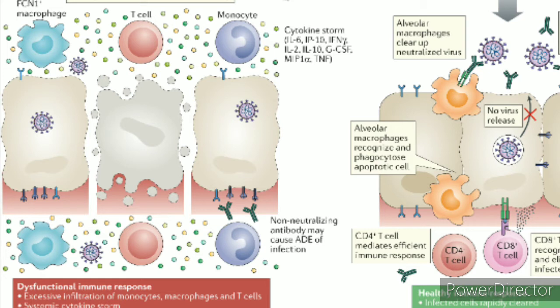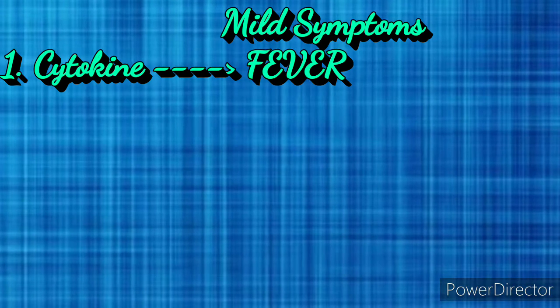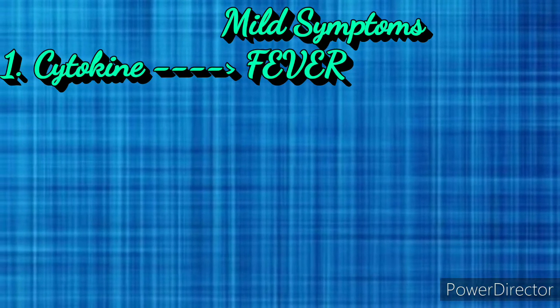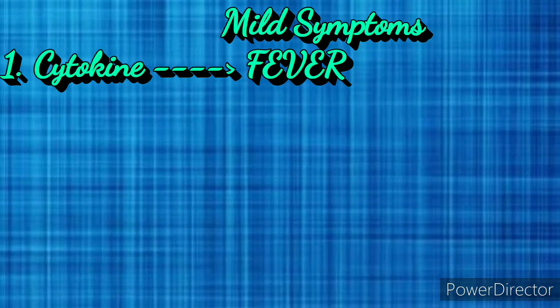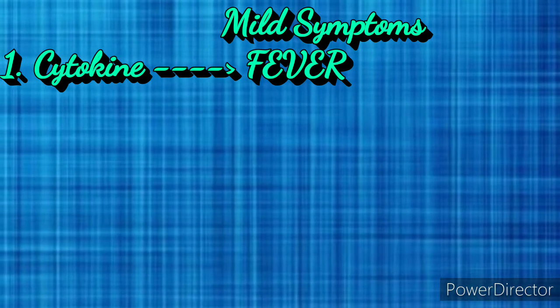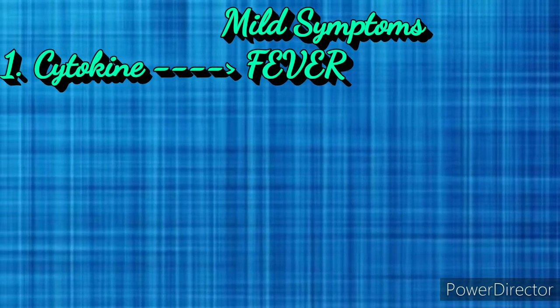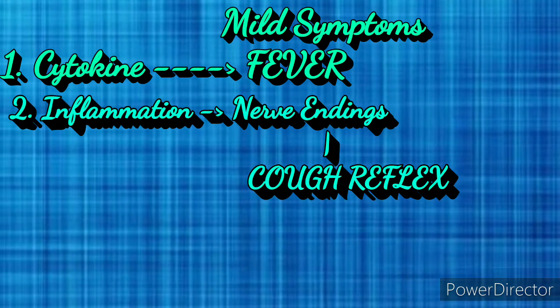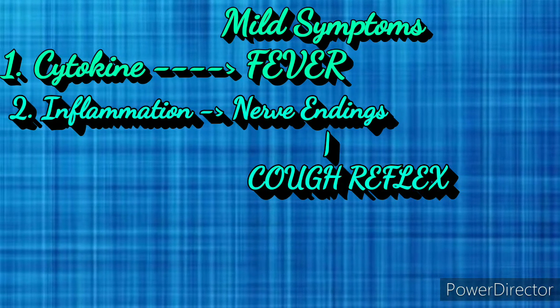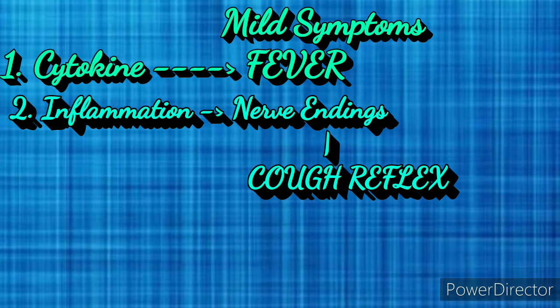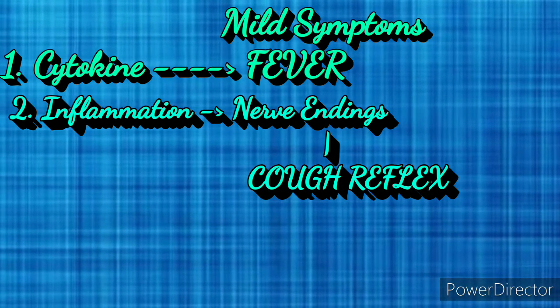Therefore, disease severity in patients is not only due to viral infection but also due to the host response. How does the body represent all this — that is, what are the symptoms of COVID-19? First of all, the release of cytokines is responsible for causing fever, a prominent feature of COVID-19. Secondly, the inflammatory response occurring in the lung parenchyma stimulates nerve endings to initiate cough reflexes. Thus, people often present with dry cough.